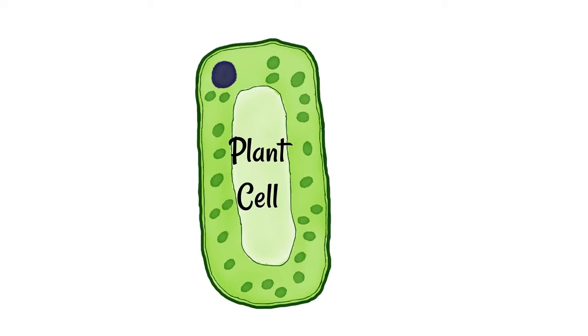Photosynthesis takes place inside of plant cells, primarily palisade cells which is what's shown here. It occurs inside of an organelle called a chloroplast.